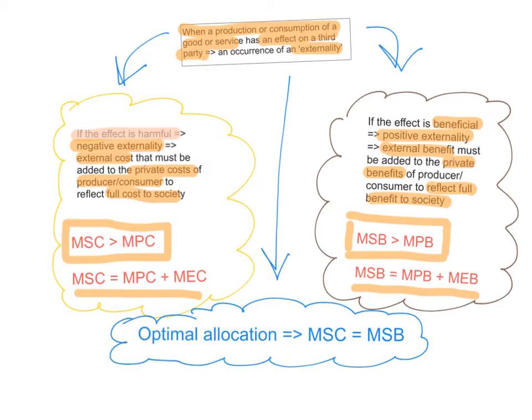The optimal allocation of resources in the market occurs when marginal social costs equal marginal social benefits. So to reach the optimum where community surplus is maximized, marginal social costs have to equal marginal social benefits.